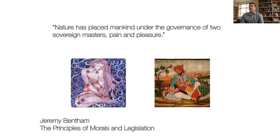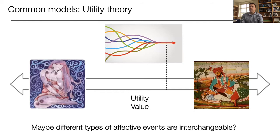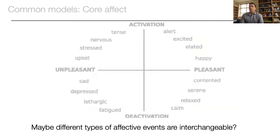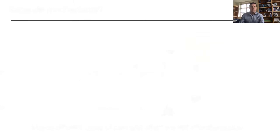Our affective concepts haven't given us a terrific roadmap for what the affective units of analysis are. Going back to Jeremy Bentham, utility theory places pain and pleasure on a continuum where many different kinds of pains and pleasures are all interchangeable — integrated into one common representation of utility or value. Similarly, the idea of core affect in psychology maps many different kinds of affective manipulations into the space of valence (pleasant/unpleasant) and activation/arousal. So perhaps all these different types of affective events are interchangeable.